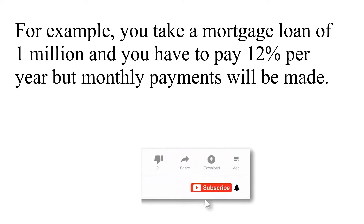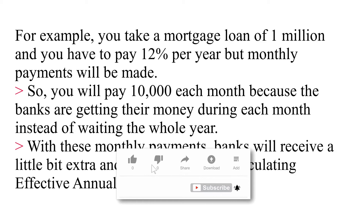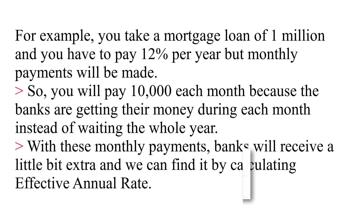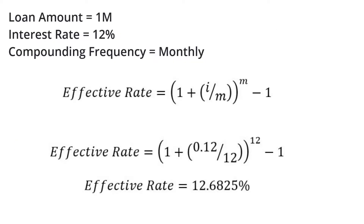For example, you take a mortgage loan of 1 million and you have to pay 12 percent per year but monthly payments will be made, so you will pay 10,000 each month. Because the bank is getting their money during each month instead of waiting a whole year, with these monthly payments the bank will receive a little bit extra, and we can find it by calculating the effective annual rate of return.